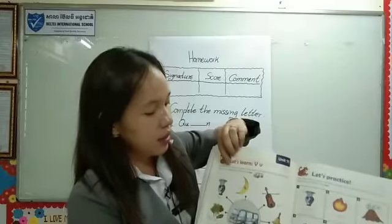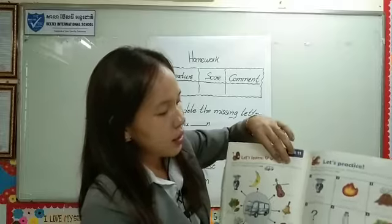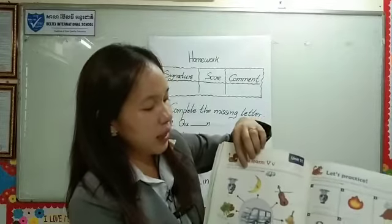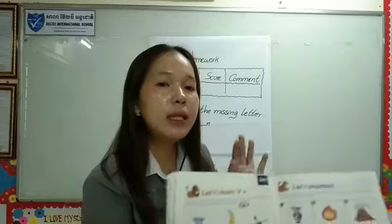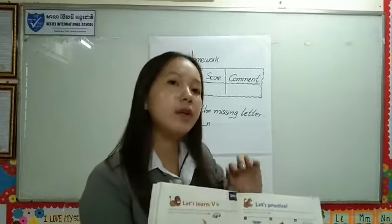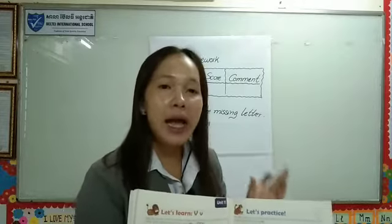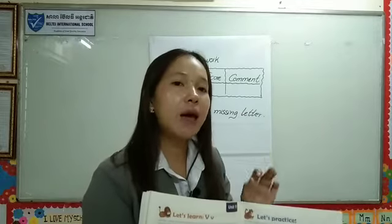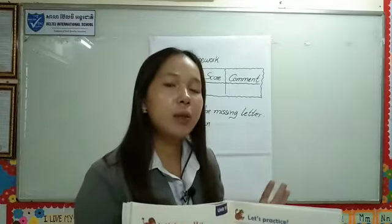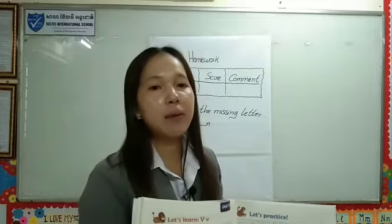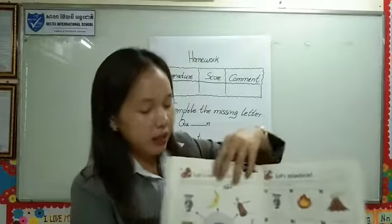It says: the name of each picture, circle each picture that has the sound you hear at the beginning of the word 'van.' So you need to listen to the beginning sound of each picture. If the beginning sound is like 'van,' you need to circle that picture. But if the picture does not have the same beginning sound like 'van,' no need to circle it. Okay, please listen all together.